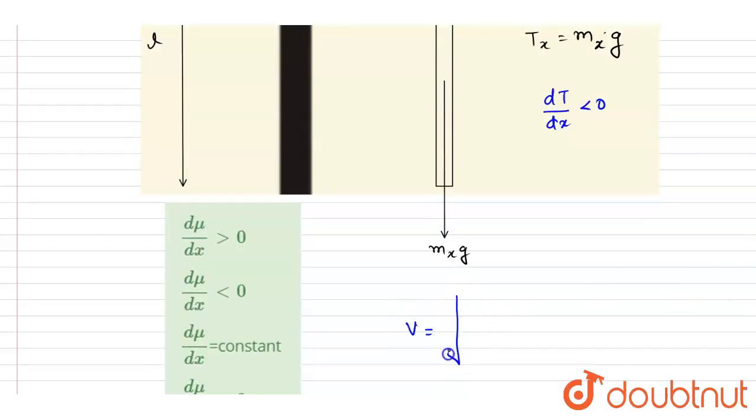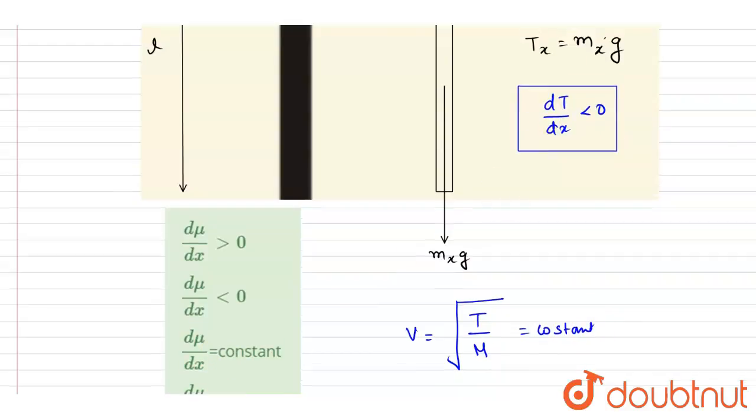Now if I talk about the velocity, velocity—it is constant, so what we will say here? If we want this constant and I am saying that the tension is decreasing with x.